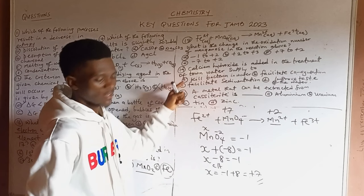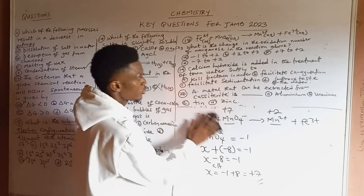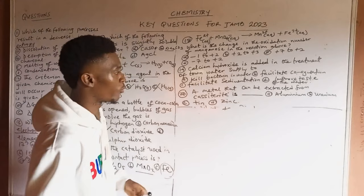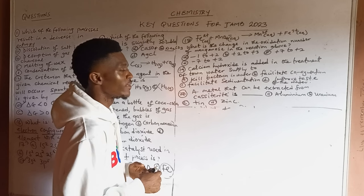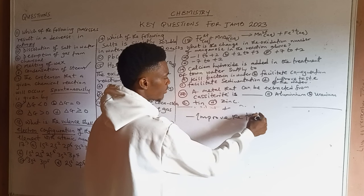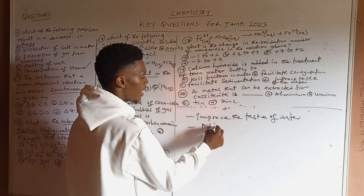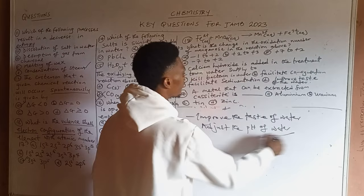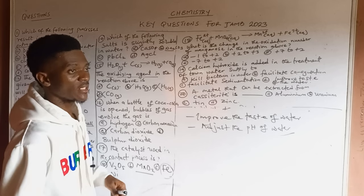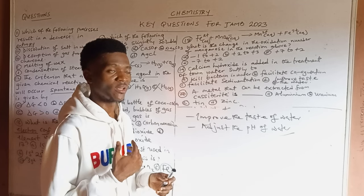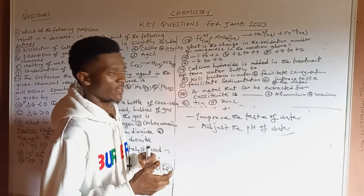Question 19: Calcium hydroxide is added in the treatment of tap water supply. The addition of calcium hydroxide during water treatment serves two functions: to improve the taste of water and to adjust the pH of water. Additionally, chlorine is added to kill germs; fluorine is added to prevent tooth decay; and iodine is added to prevent goiter.